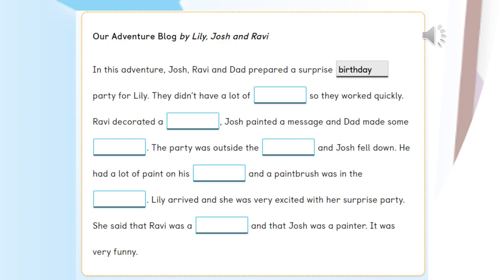In this adventure, Josh, Ravi and Dad prepared a surprise birthday party for Lily. They didn't have a lot of time, so they worked quickly. Ravi decorated a cake. Josh painted a message and Dad made some sandwiches. The party was outside the lighthouse and Josh fell down. He had a lot of paint on his clothes and a paintbrush was in the cake. Lily arrived and she was very excited with her surprise party. She said that Ravi was a cook and that Josh was a painter. It was very funny. If you need more time, just pause the video.